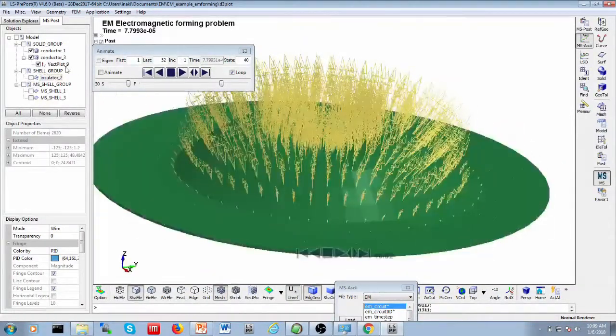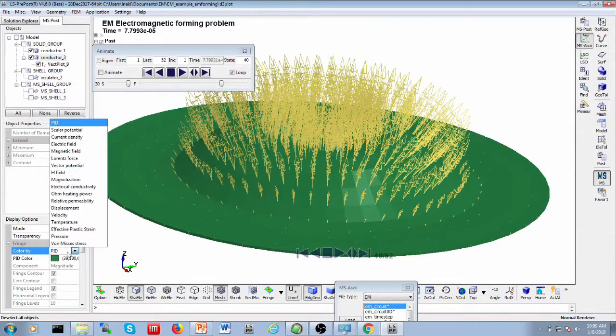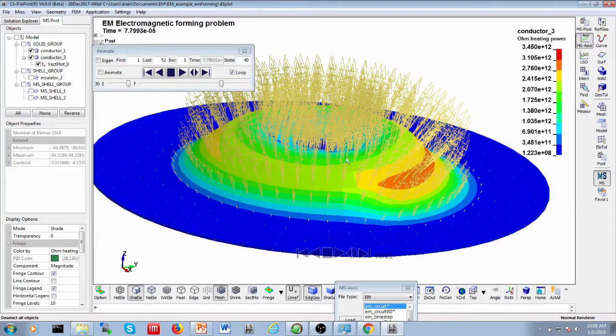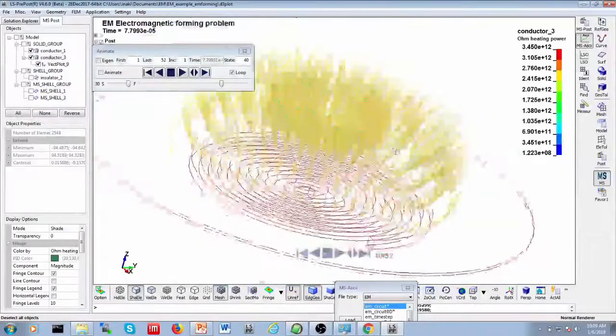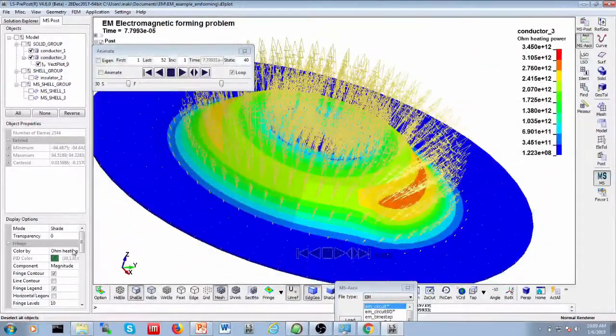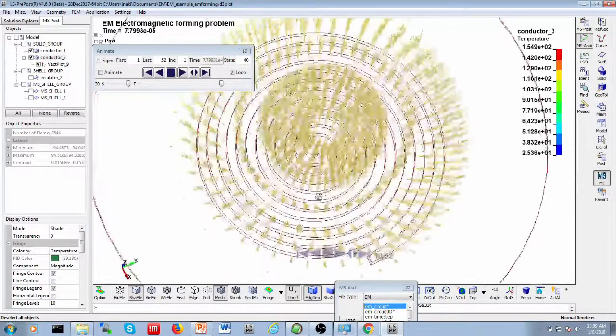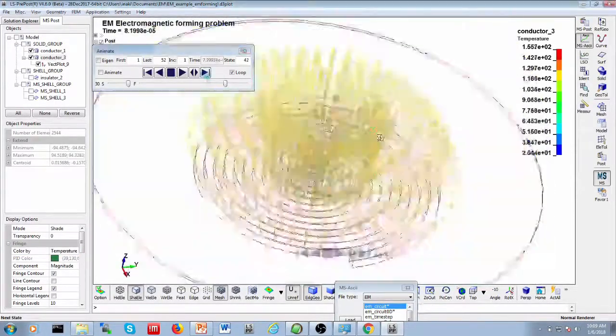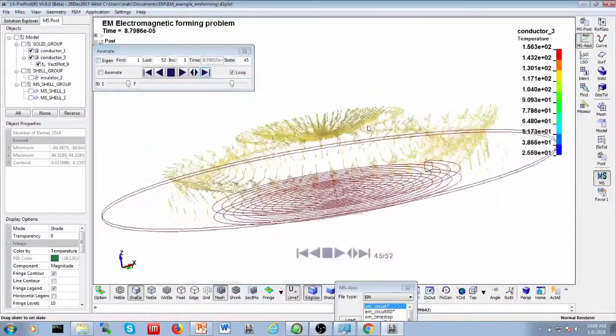Then we also have in the same input deck, if you look here we have the Joule heating power, it's the same thing as the Joule heating that is being generated, and since if you take a look at the complete input deck, you will see that the thermal problem is also defined, so this also has an impact on temperature. So what you see here is more heating where the deformations are higher and where the Lorentz forces and the current density is at its highest.